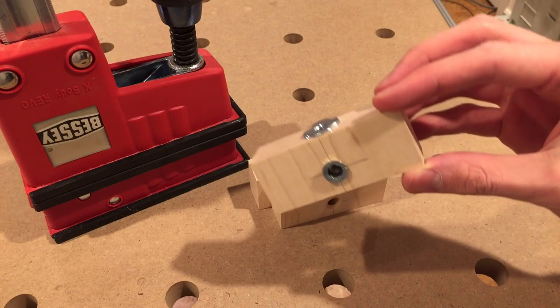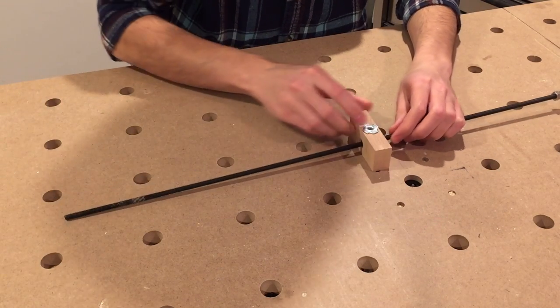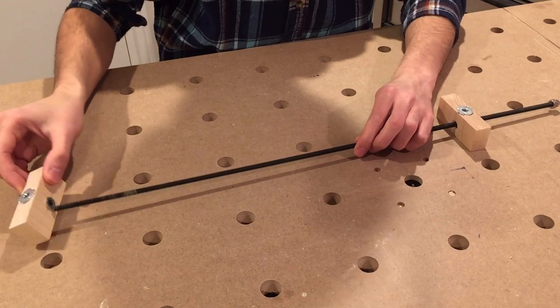In one of them, I've also placed a threaded insert. Now putting the skewer together. First, a block with straight through clearance hole, then the threaded insert block.